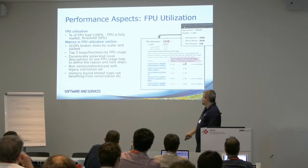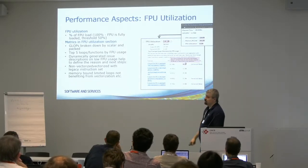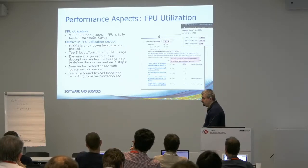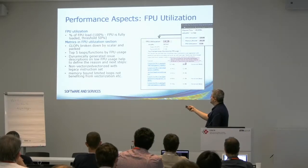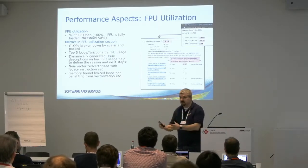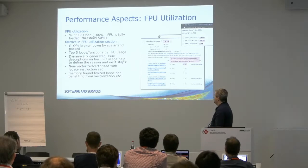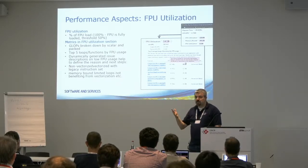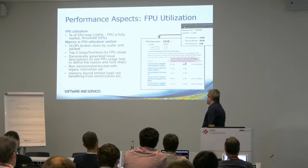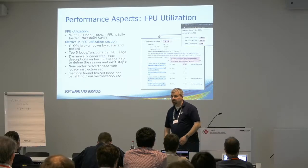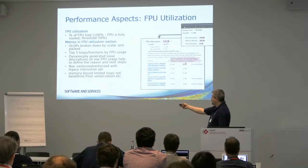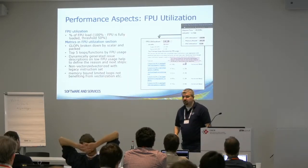Floating point operations: it tells you the FPU load — 100% means you're fully vectorizing, using all the FPU cycles in the system. It tells you the achieved GFlops broken down by scalar and packed — floating point operations from scalar code versus vectorized floating point code. It tells you the top five loops and functions. It tells you whether or not you're using non-vectorized instructions with a legacy instruction set. And it gives you some indication whether or not you have memory-bound loops that are not really benefiting from SIMD vectorization — because if you have a really memory-bound loop, the benefit from vectorization is rather low.